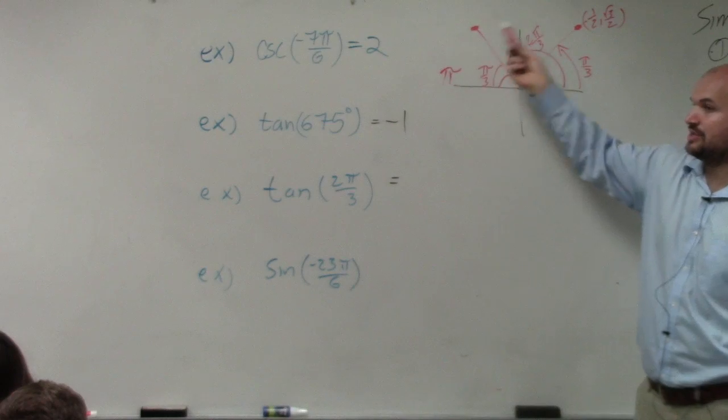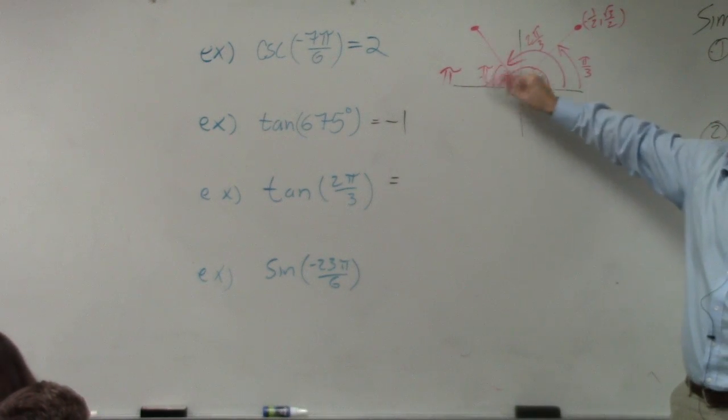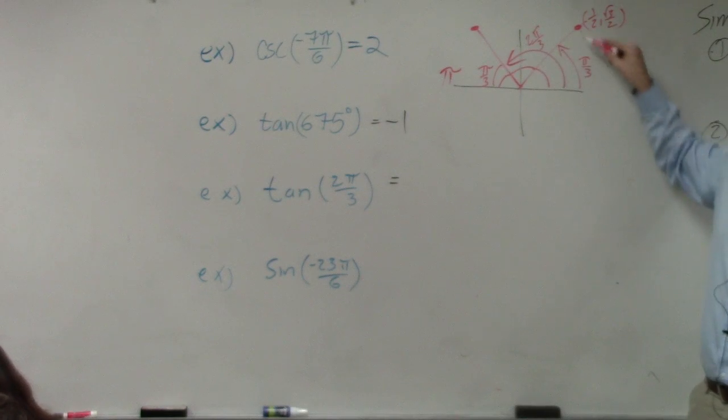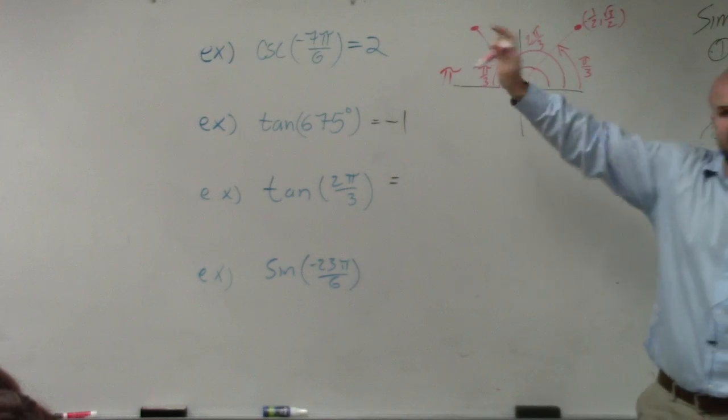So this point is a reflection about the y-axis because they share the same reference angle. They're the same distance from the x-axis. This one's π over 3. That one's π over 3. So it's a reflection about the y-axis.